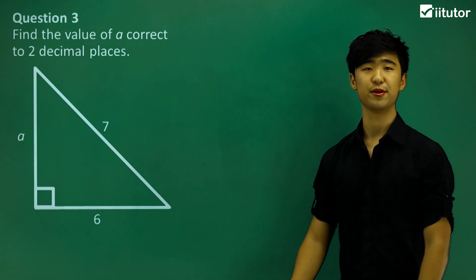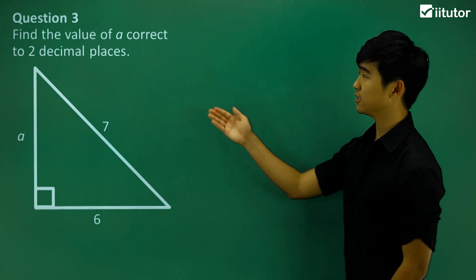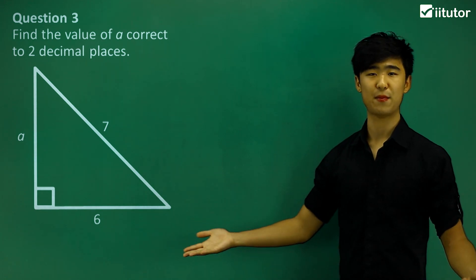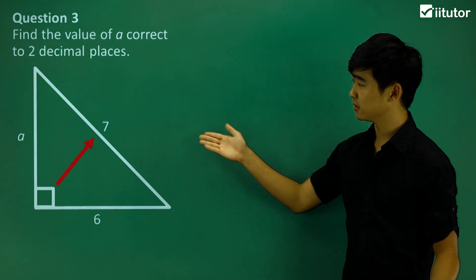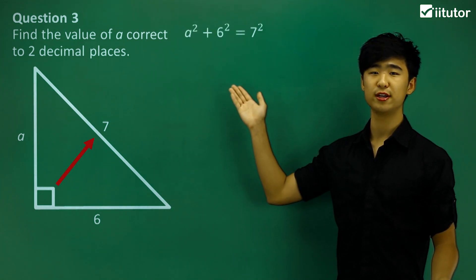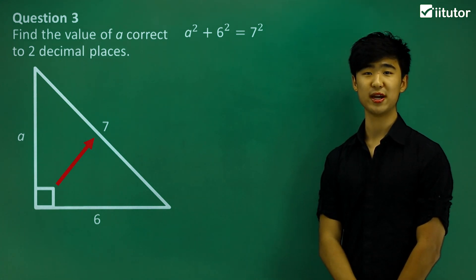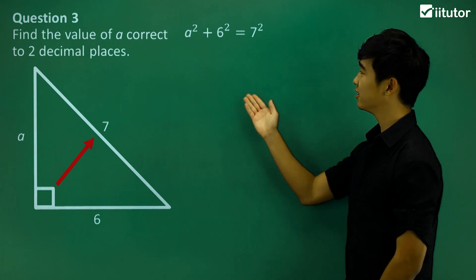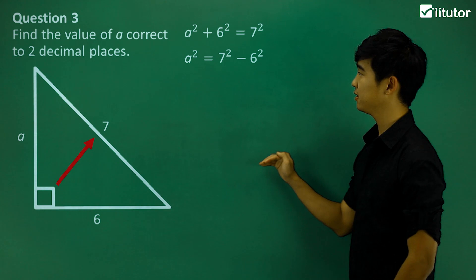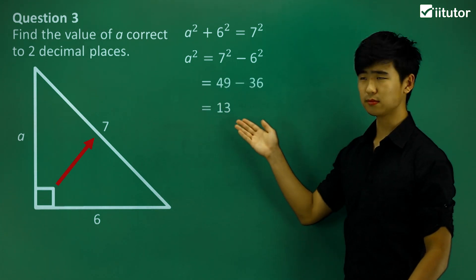Question number 3: find the value of a correct to two decimal places. Again, very similar, but this time we want two decimal places. We have a right-angled triangle and we apply the Pythagoras theorem. The hypotenuse is identified, and the theorem written out is: a squared plus 6 squared equals 7 squared. We move everything away from a, and after calculating the numbers we get a squared equals 13.